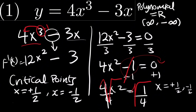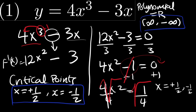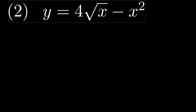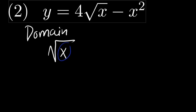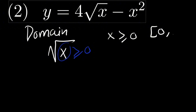Because these points are inside the domain, we take them as the critical points. For question number 2, we start by finding the domain. Because we have a square root, we take what is inside the square root and make it greater than or equal to zero. So our domain will be x greater than or equal to zero, meaning the domain is from zero to infinity.